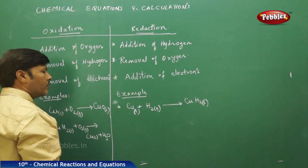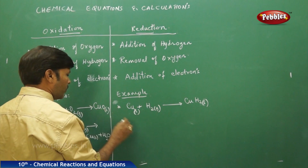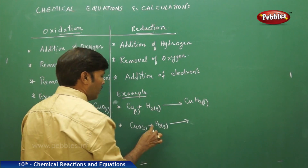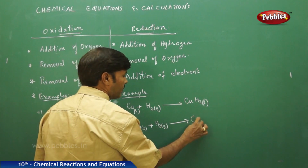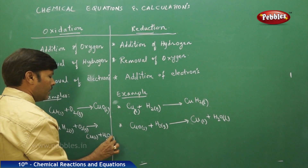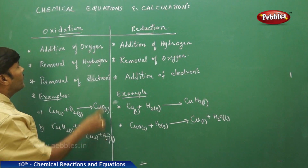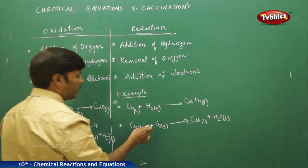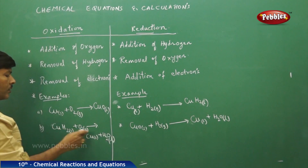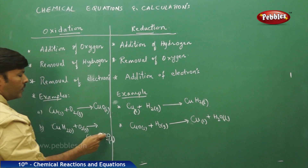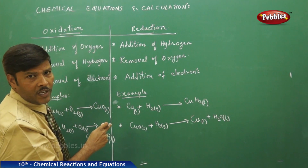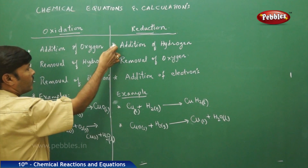For removal of oxygen: take cupric oxide solid. Because we want to remove oxygen, we pass hydrogen gas — oxygen is removed in the form of water, so the metal oxide is reduced to metal solid, and water is produced as a liquid. In oxidation, hydrogen is removed in the form of water by adding oxygen; in reduction, oxygen is removed in the form of water by adding hydrogen. The first and second statements in both oxidation and reduction have been justified.